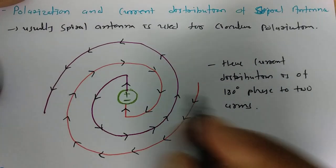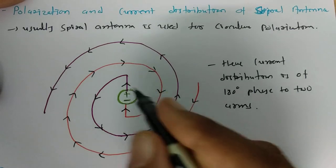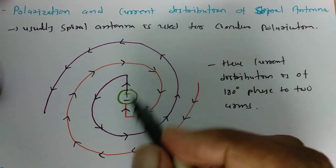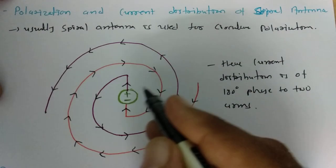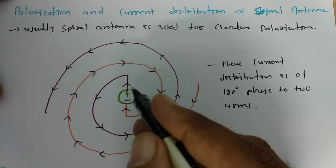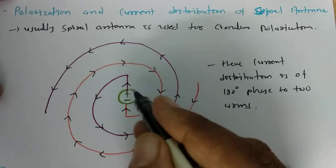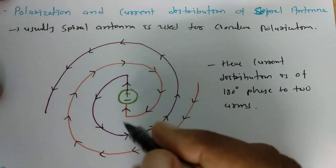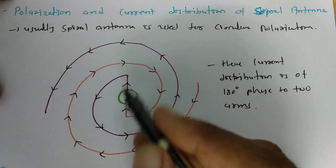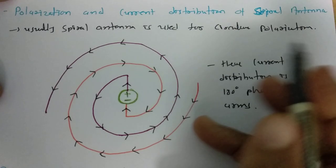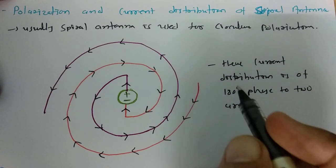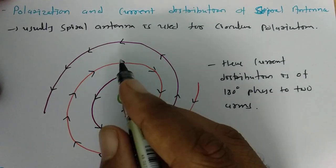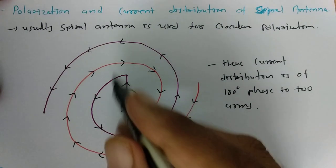By using the feeding mechanism of the spiral antenna — connecting the outer conductor of the cable with one arm and the ground with the other arm — we can easily achieve circular polarization, because the current distribution is 180 degrees out of phase between the two arms.